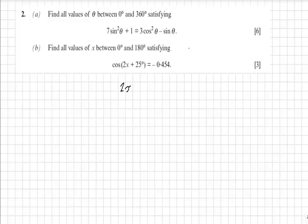So initially let's find out what the inverse cosine of minus 0.454 is. That gives us an initial value of 117 degrees.